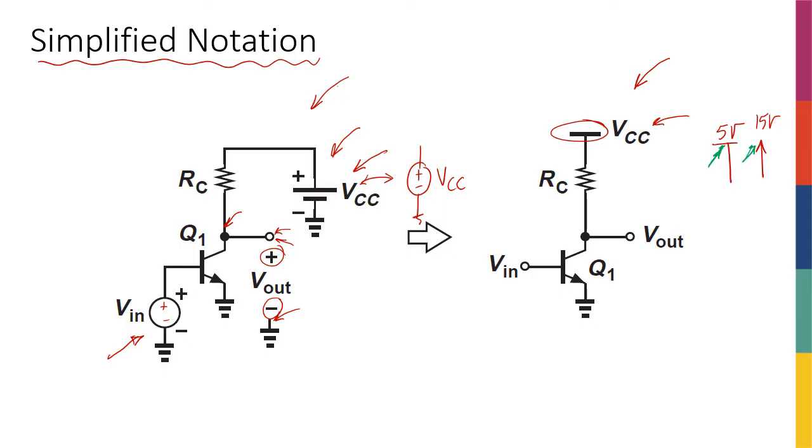This is equivalent to having a voltage source of 5 volts from ground to that node, and then you can connect whatever you want to that. Similarly with the 15 volts we can say the same thing from ground to that point.